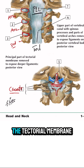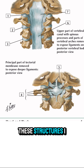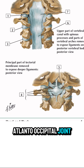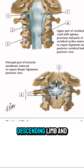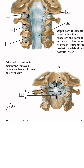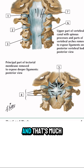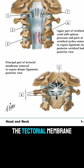Number six is the tectorial membrane. To summarize these structures: one, two, and three are the capsules between the atlanto-occipital joint, atlanto-axial joint, and the zygapophysial joint. Four is the cruciate ligament with its descending limb and transverse limb. Five is the alar ligament on both sides. Six is the posterior longitudinal ligament, which is much more clear here, and seven is the tectorial membrane.